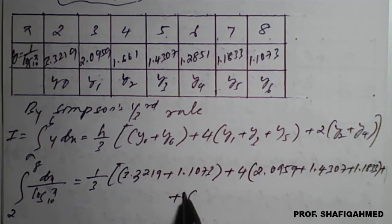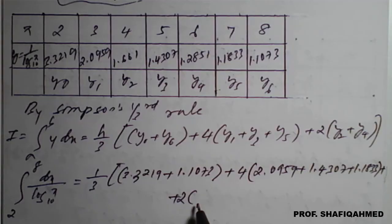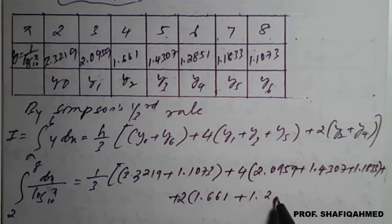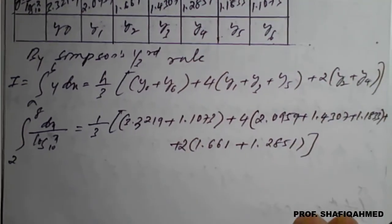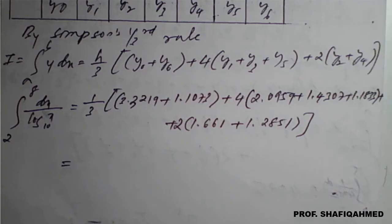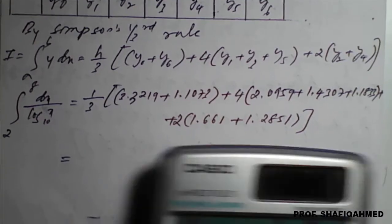2 times y2 plus y4. y2 value is 1.661 plus y4 value is 1.2851. We will enter all these values in the calculator.